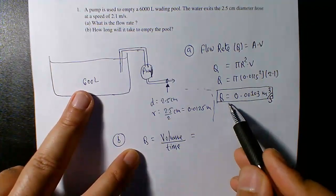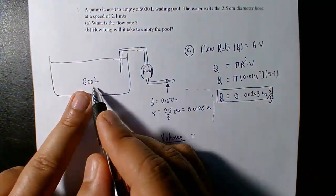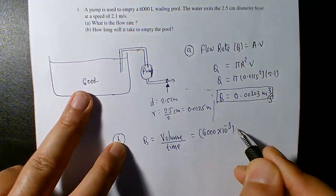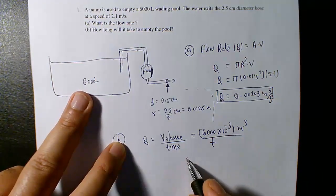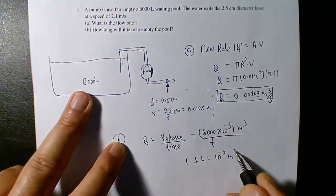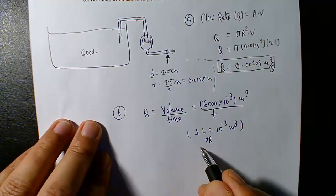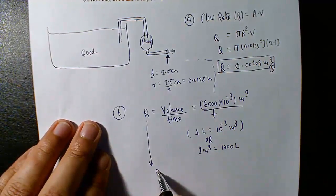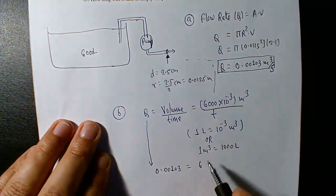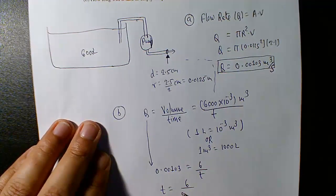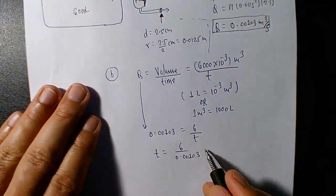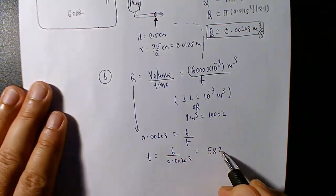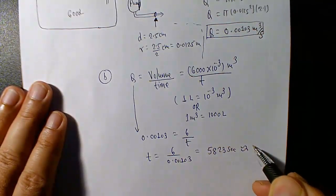One liter equals 0.001 cubic meters, so 6,000 liters equals 6 cubic meters. Since Q equals 0.00103 cubic meters per second, time t equals 6 divided by 0.00103, which gives 5,823 seconds. Converting to minutes, that is about 97 minutes to empty the pool.